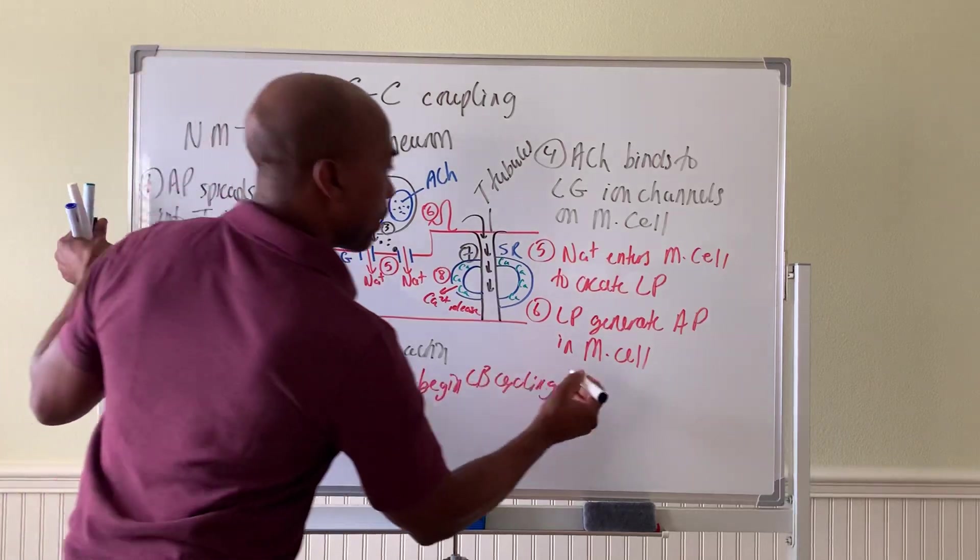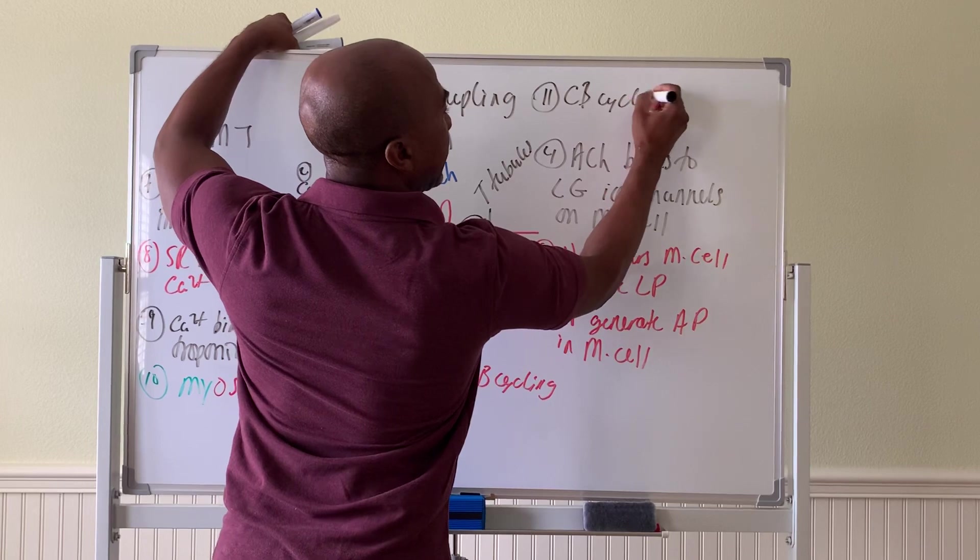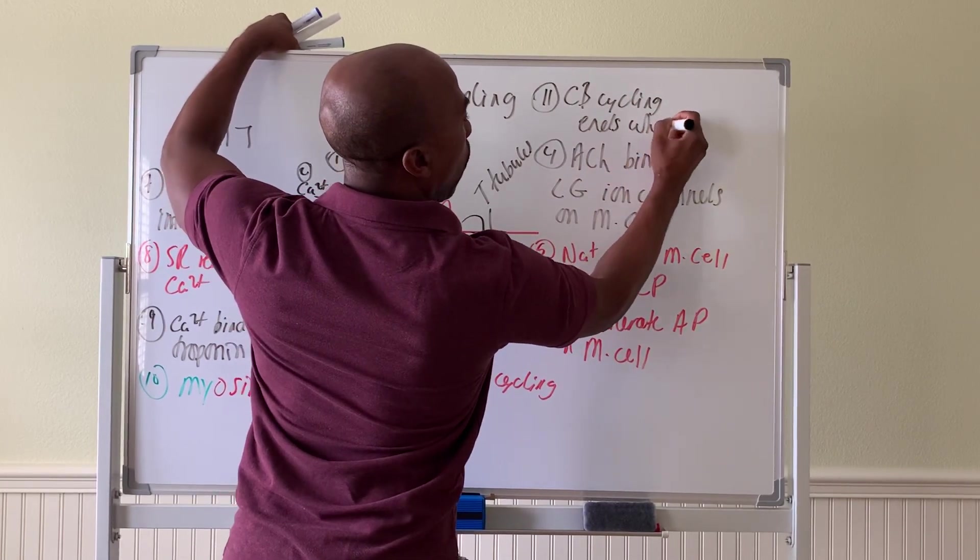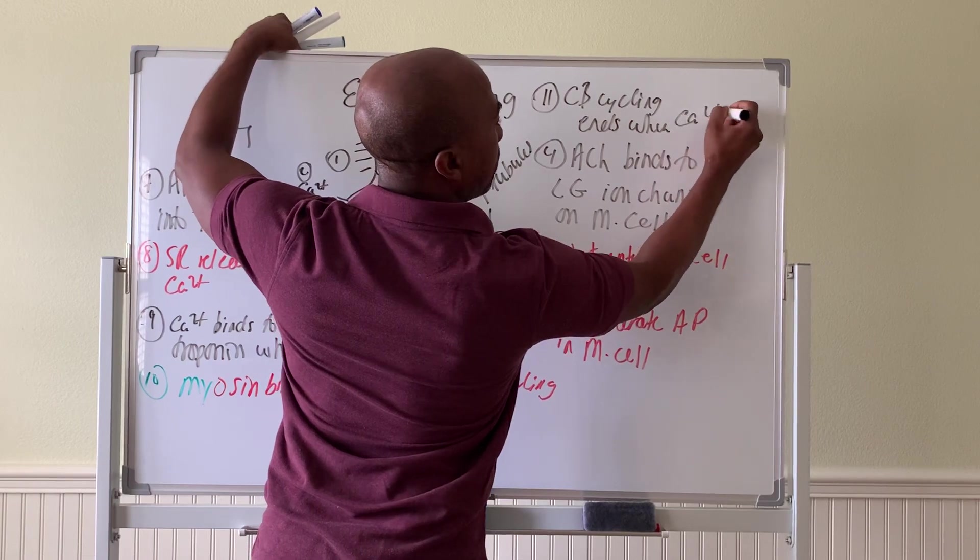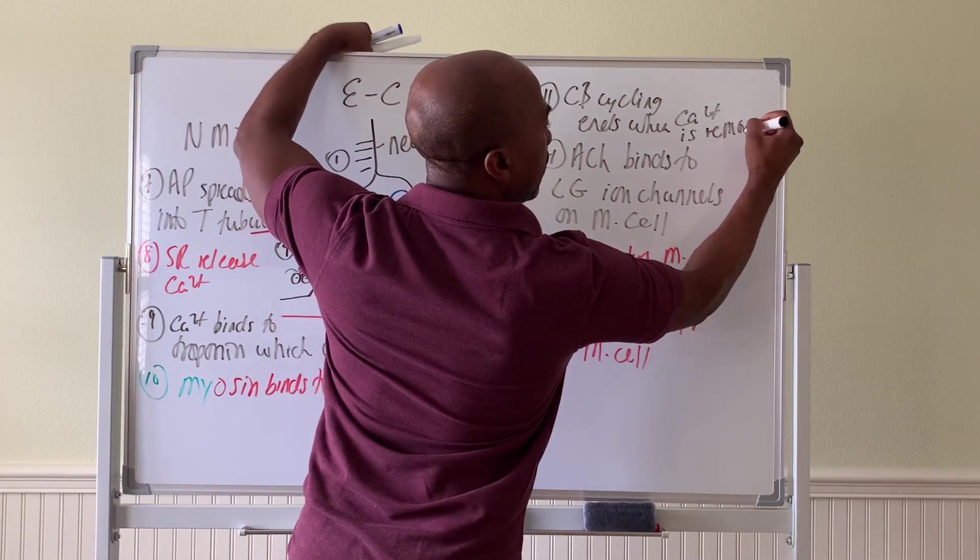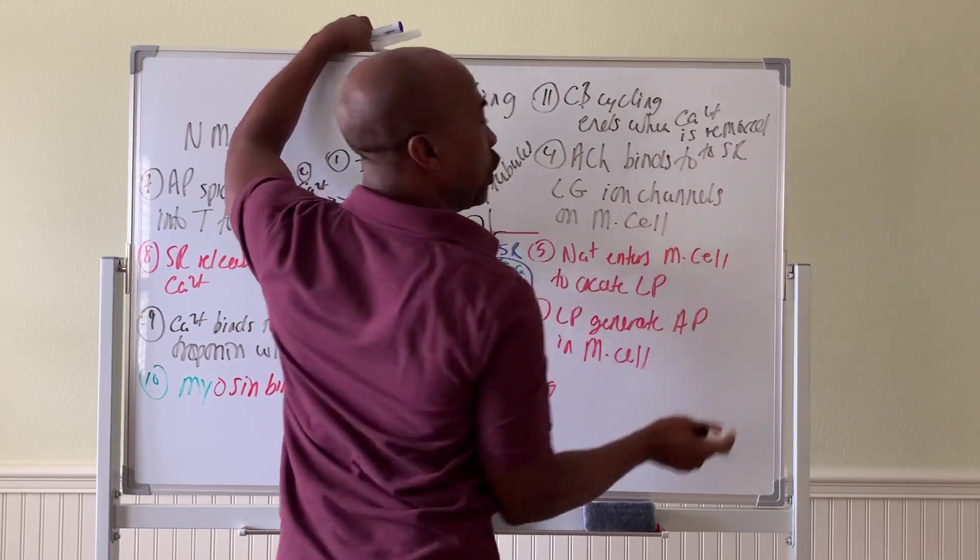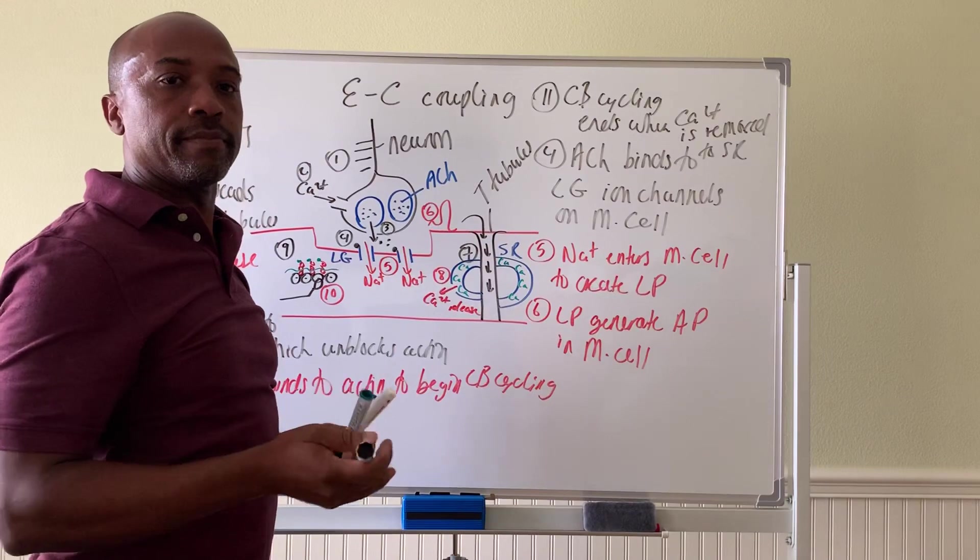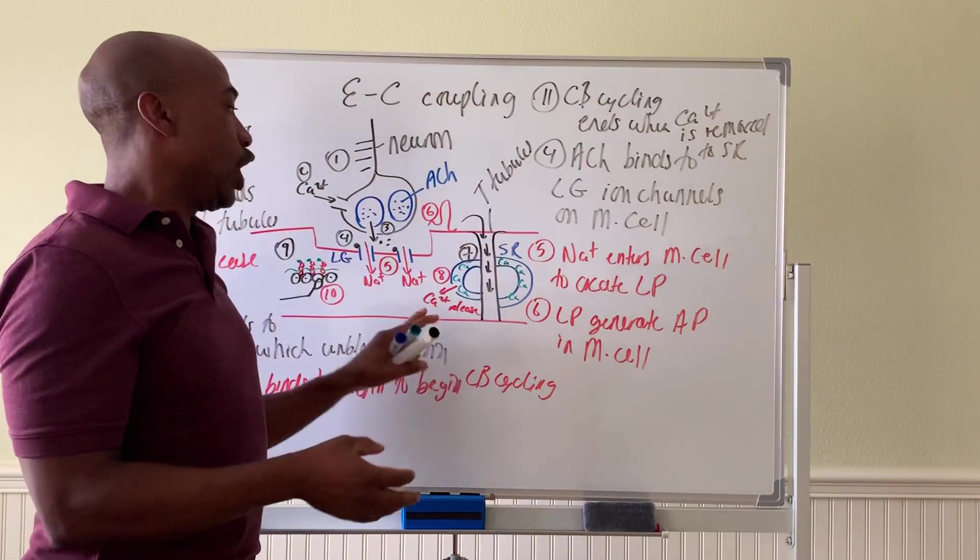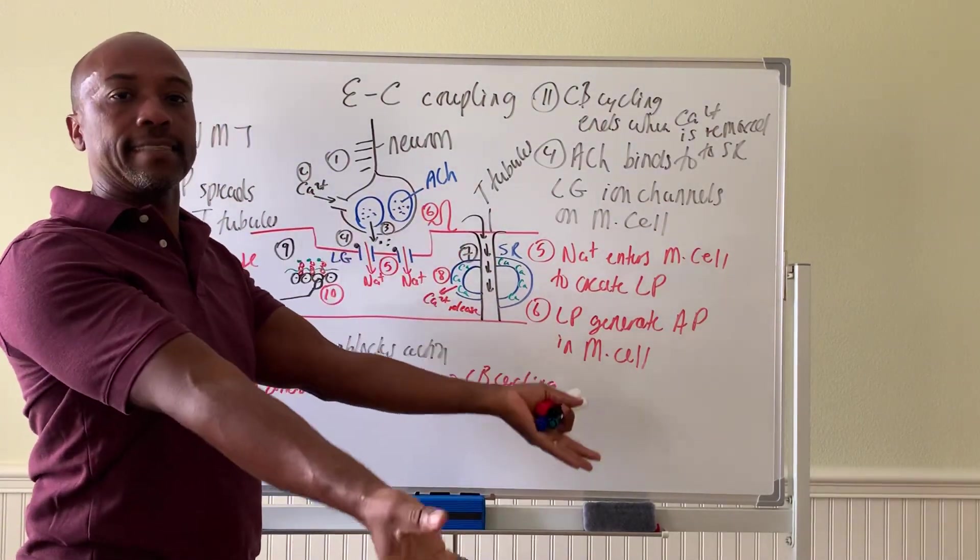And this only stops when you're able to pump the calcium back into the SR. So this ends—step eleven, crossbridge cycling ends when calcium is removed back to the SR, or moved to SR, usually by ATP pumps. So this process costs ATP as well to pump the calcium back into the SR. That way you can then block the actin again and the muscle can relax that way.